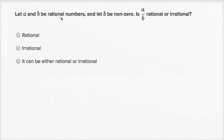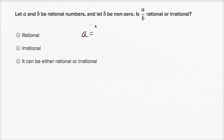We're told let A and B be rational numbers and let B be nonzero. They had to say let B be nonzero because we're about to divide by B. Is A over B rational or irrational? Let's think about it. They're both rational numbers, so that means that A, since it's rational, can be expressed as the ratio of two integers.